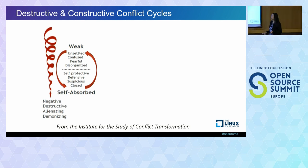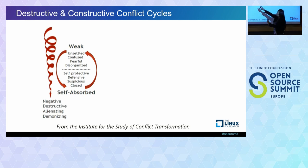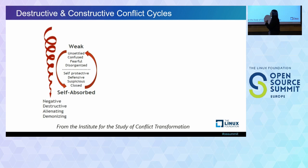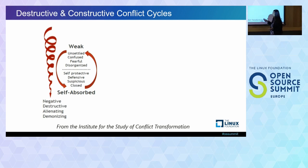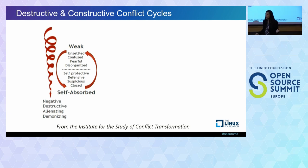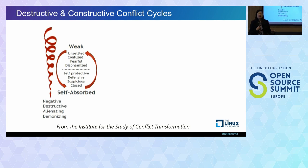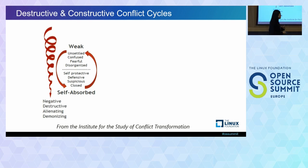These are cycles of conflict. In the destructive cycle: when somebody's feeling weak — unsettled, confused, fearful, disorganized — that feeds into their self-absorption. The more self-absorbed they are, the more they tend to invalidate the other person's viewpoint. Then the other person feels weak and attacked and needs to defend themselves. Both people dig their heels in and you get caught in this vicious cycle.